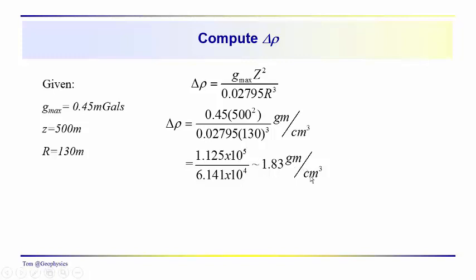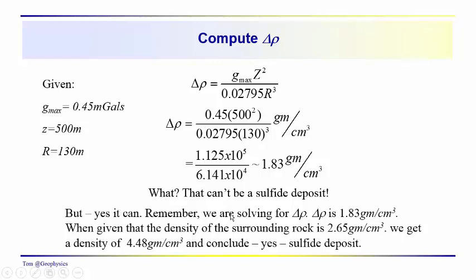We come up with this 1.83 grams per cubic centimeter and scratch our heads. That doesn't really... That's not 4.5 grams per cubic centimeter. This must be something else. But remember this is delta rho that we're computing. The delta rho is 1.83 grams per cubic centimeter. The anomaly is positive, so we must have to add this to 2.65 grams per cubic centimeter. Not a sulfide deposit? Well, better keep going with that. Delta rho again, 1.83. Given density of the surrounding rock, 2.65. We get a density of 4.48. Yes, it certainly does appear, if our estimate of the dimensions is correct, that we have an object down there that has about the right density. It could be a sulfide deposit.